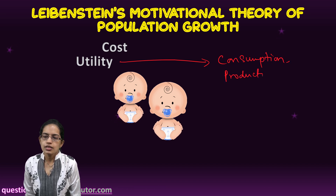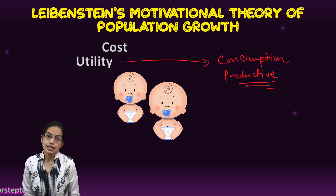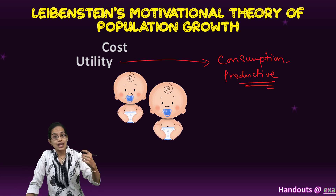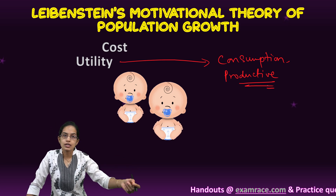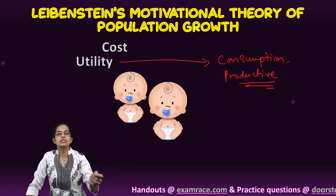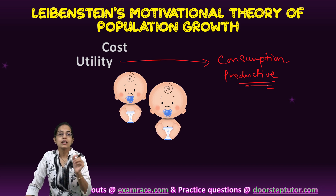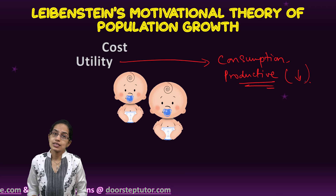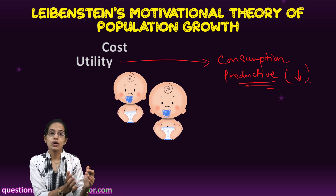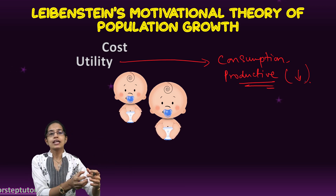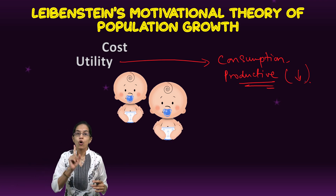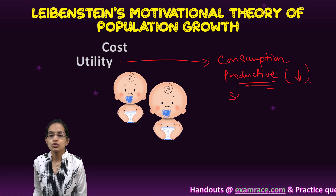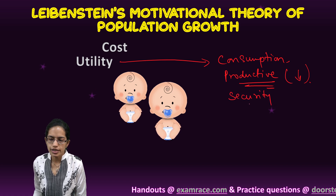The second utility is productive utility — the utility derived from the fact that the child would grow up, start to earn, and be able to sustain the family. This utility definitely declines with increasing living standards because people have their savings and are not dependent on their children for earnings. The third kind of utility is the social old age security utility.